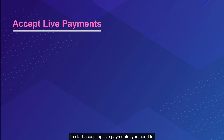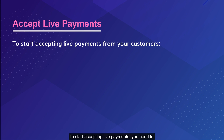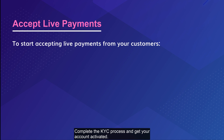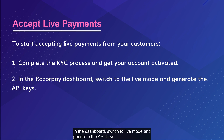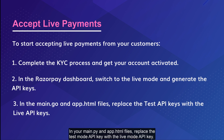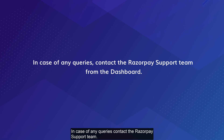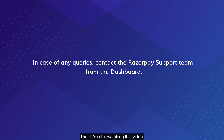To start accepting live payments, you need to complete the KYC process and get your account activated. In the dashboard, switch to live mode and generate the API keys. In your main.go and app.html files, replace the test mode API key with the live mode API key. In case of any queries, contact the Razorpay support team. You can raise a request from the Razorpay dashboard.